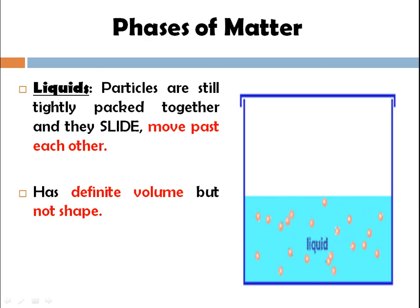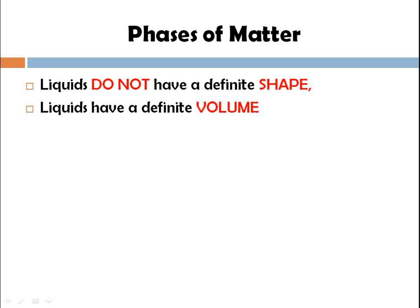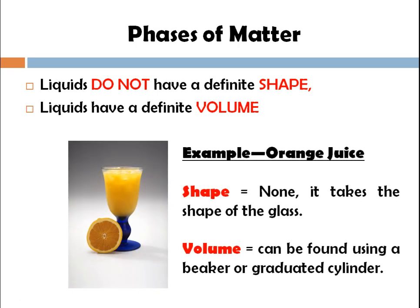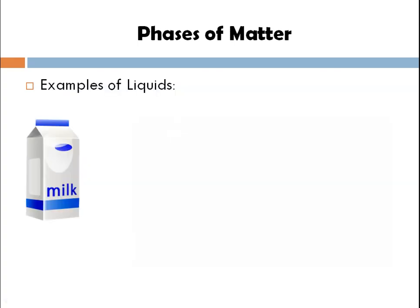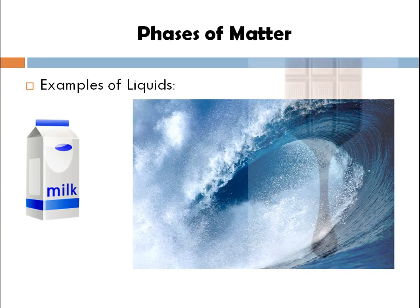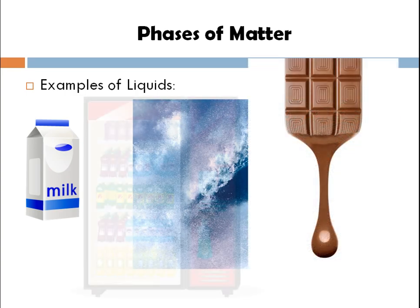Liquid has a definite volume but does not have a definite shape. Liquids do not have a definite shape but do have a definite volume — we can measure the volume, but we cannot say a particular liquid has a specific shape. The shape of a liquid is the shape of the container you fill it into. These are examples of liquid forms of matter.